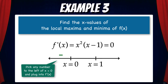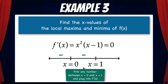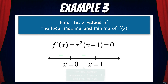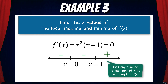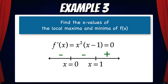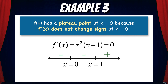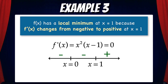If we pick any number to the left of x equals zero and plug it into f' of x, the sign is negative. Any number between zero and one also gives a negative sign. Then any number to the right of one gives a positive sign. Now we can make conclusions. f of x has a plateau point at x equals zero because f' of x does not change signs at x equals zero. And f of x has a local minimum at x equals one because f' of x changes from negative to positive at x equals one.